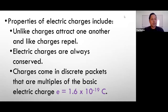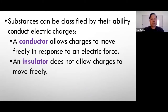Charges come in discrete packets that are multiples of a basic electric charge, which is 1.6 times 10 to negative 19 coulombs — also the charge of a proton and the charge of an electron. Substances can be classified by their ability to conduct electric charges. A conductor allows charges to move freely in response to an electric force; for example, metals are great conductors of electricity.